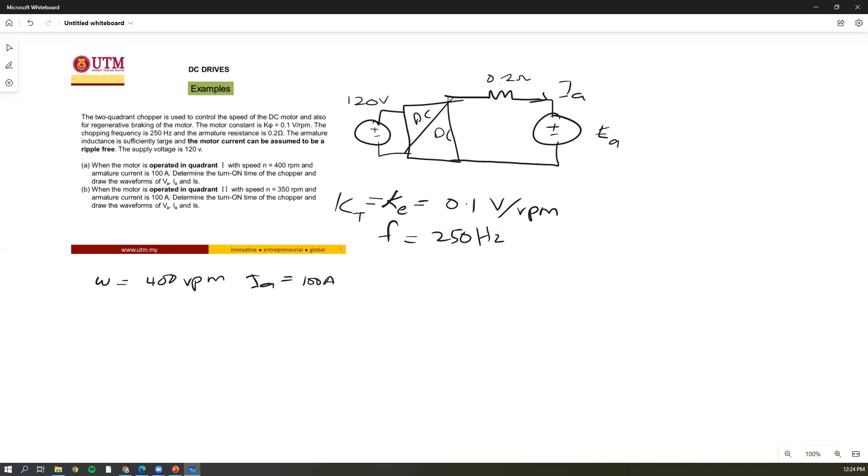We know Va is equals to Ia times Ra plus Ea. From here you can get your Ea. Your Ea is ke multiply with the speed, so your ke is 0.1 multiplied with the speed in rpm, so this one should be 40 volts. Your Ra is given, times 100, multiply with 0.2.